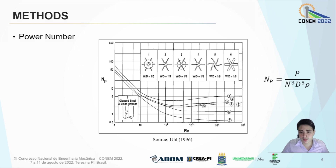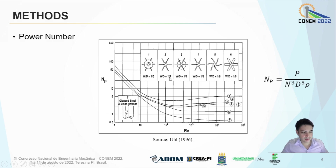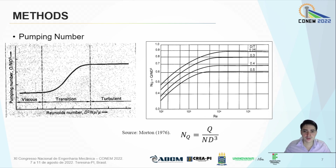The laminar regime spans from Reynolds 0 to 10 squared, shown here on the left zone. The transition regime is from 10 squared to 10 cubed, shown in this zone here. From 10 cubed onwards, it is the turbulent regime, shown in this zone here. Another characteristic number for homogenization systems is the pumping number. Just like the power number, the pumping number also has its well-defined zones: viscous, transitional, and turbulent.